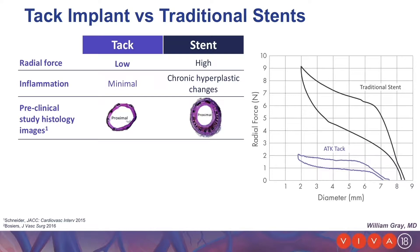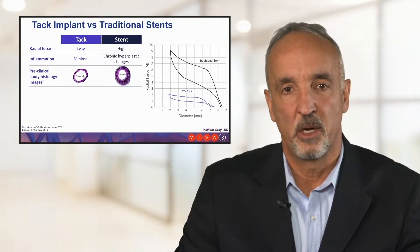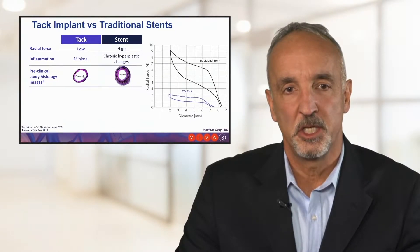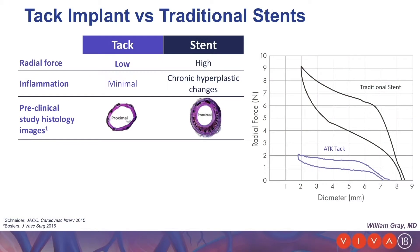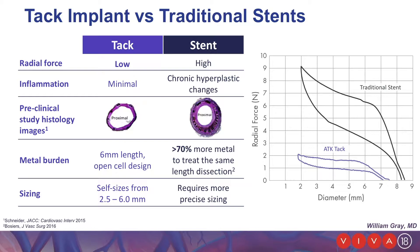The biologic outcome of that is significant. First of all, there's much less inflammation in the TAC as compared to the stent because of these high radial outward forces. And as a result, you see much less chronic hyperplastic changes, as demonstrated in the histologic slide in the third panel. Metal burden is significantly less with the 6-millimeter length open cell design, as compared to stents, which have 70% more metal to treat the same types of lesion lengths.